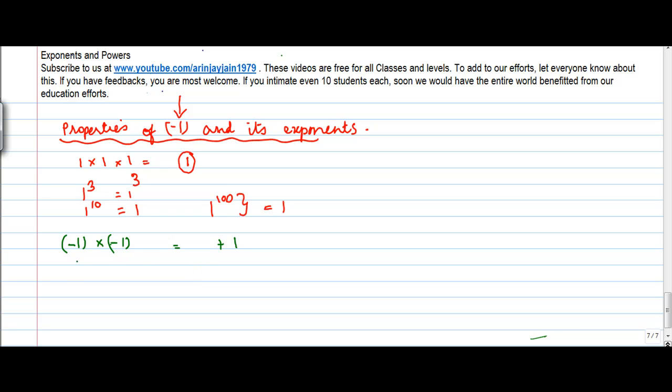But if you have minus 1 times minus 1 times minus 1, then what happens? So if you multiply these two together, this will give you 1 times minus 1.